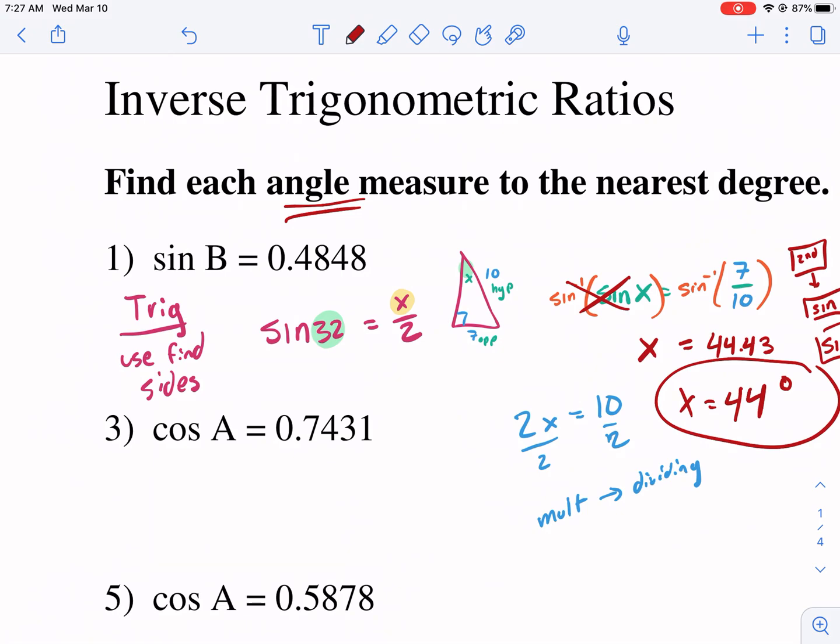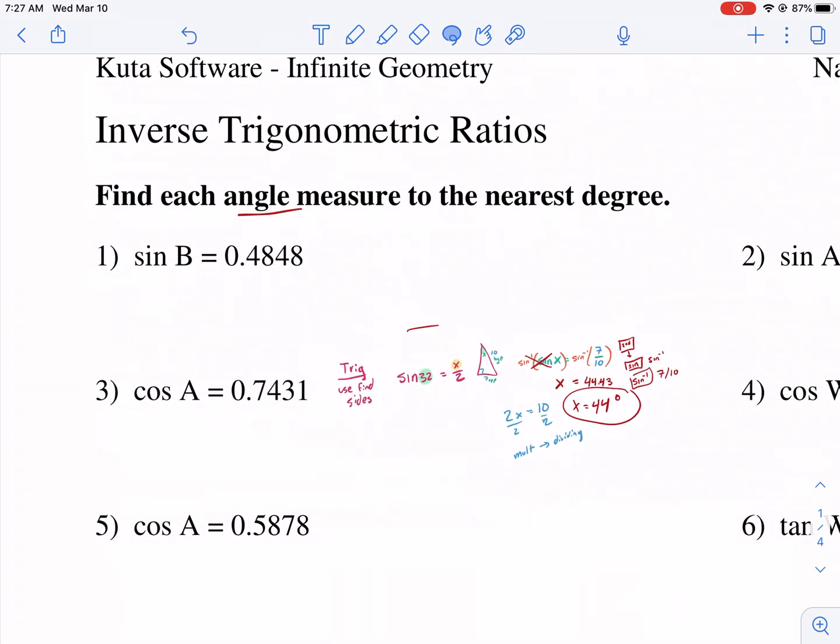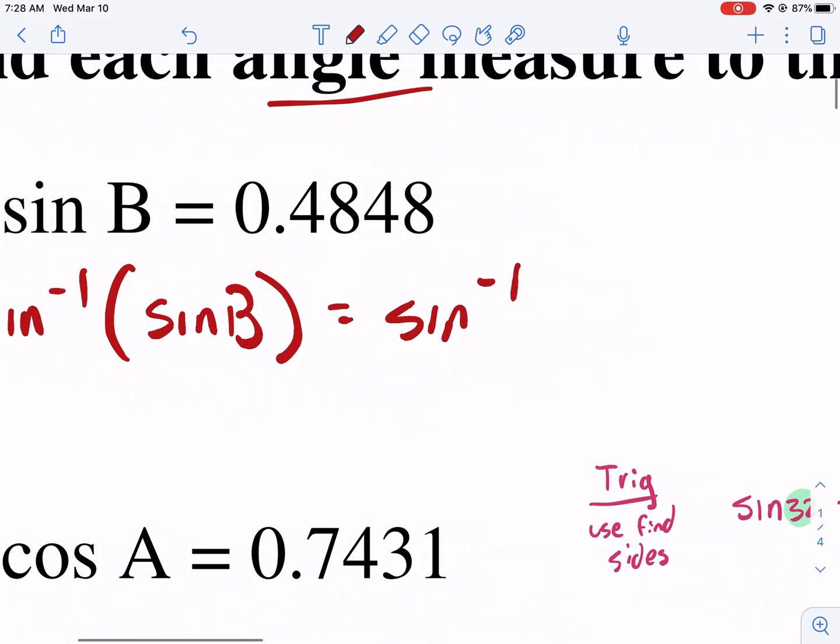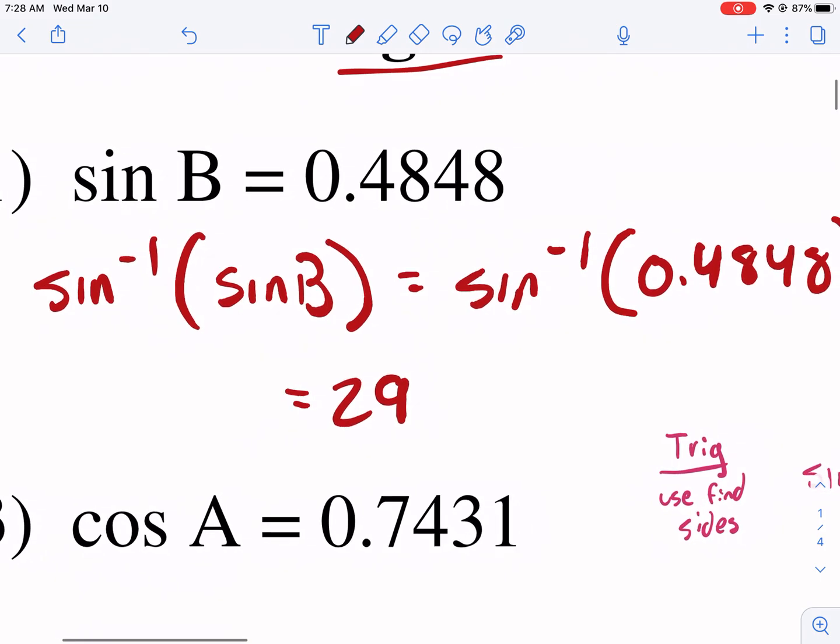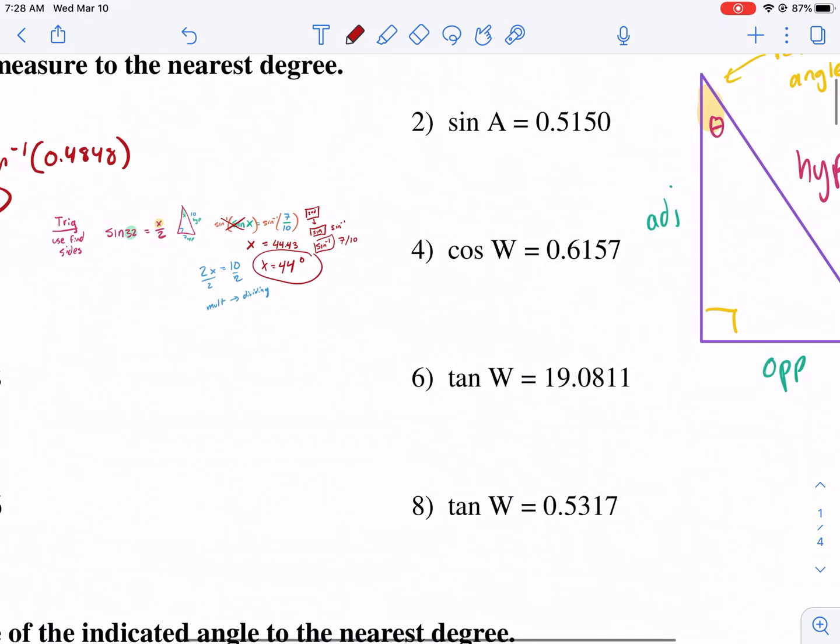Sometimes you'll have to put 7 over 10 first and then hit this. Most calculators these days will have you type inverse sine and then type 7 divided by 10. So I would literally hit second sine, and then 7 divided by 10 like that. And that gives me 44.43 rounded. To the nearest degree, that's going to be X equals 44 degrees. Remember, we're looking for angle measures, so the units are degrees.